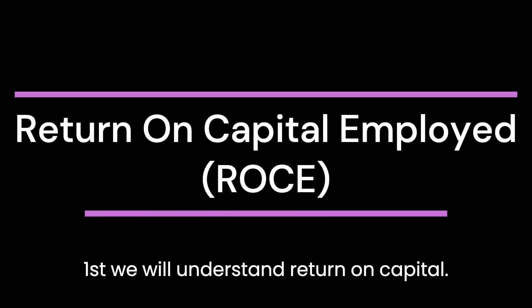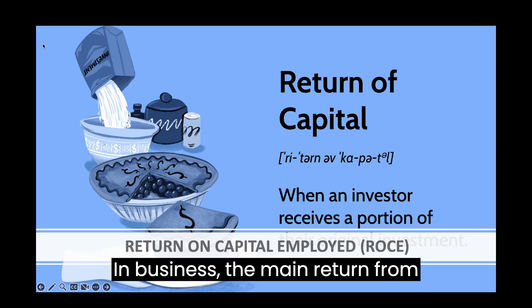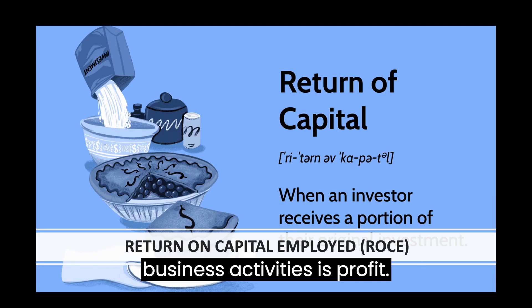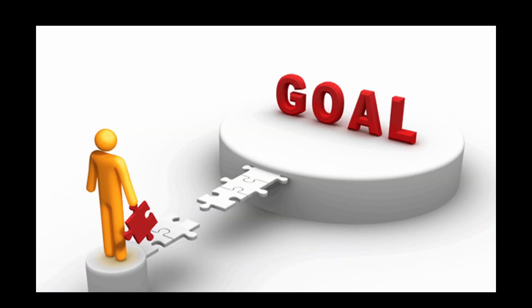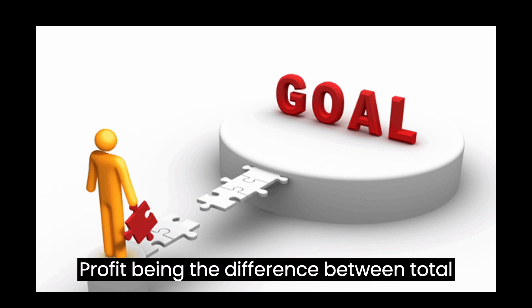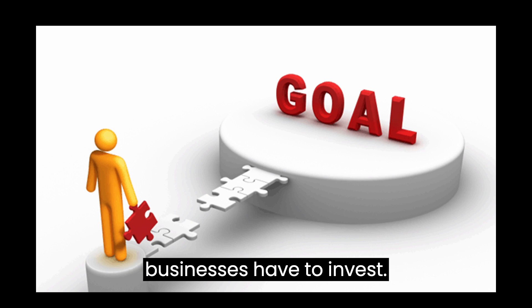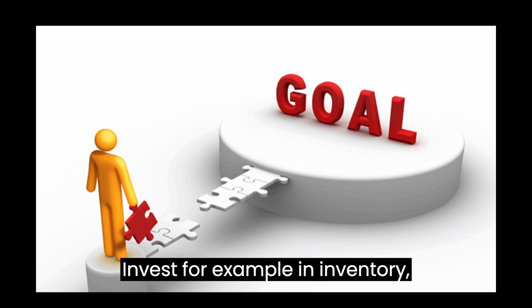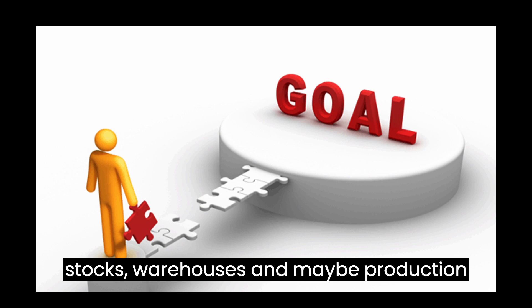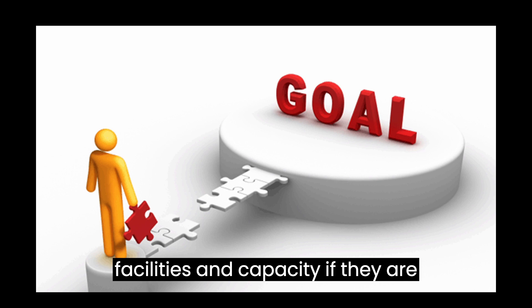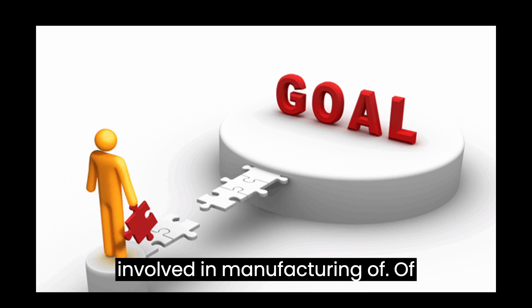First, we will understand return on capital. In business, the main return from business activities is profit — the difference between total revenues and total costs. But in order to earn a profit, most businesses have to invest, for example, in inventory, stocks, warehouses, and maybe production facilities or capacity if they are involved in manufacturing.